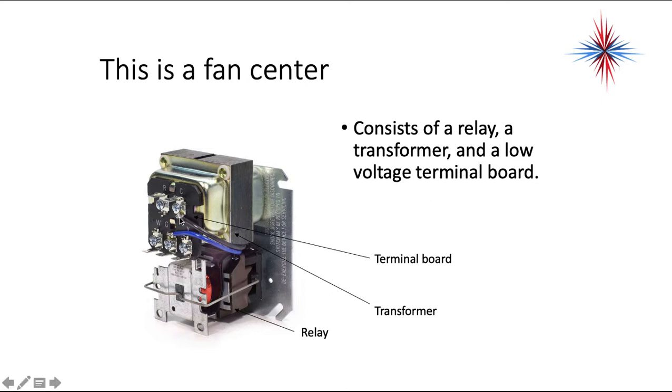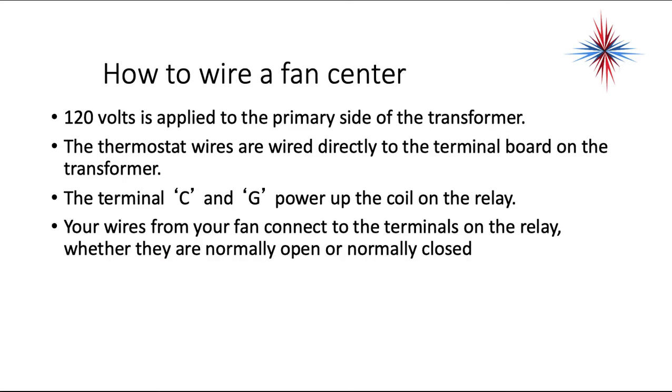Now, the terminal board always has two wires that is pre-wired on it. You have a C and you have a wire coming off the G. That is actually to the coil of the relay. The C terminal here ties in directly to the common on the transformer. And the R terminal ties in directly on the common of the transformer. So all you really need to do is put the wires in the right place.